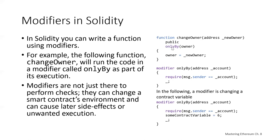If we look at what that modifier does, it says modifier only_by accepts an argument of type address named account, and it requires that the message sender is that account. What this does is require that the message sender is the owner address being passed in. If the message sender is the owner address, they can execute change_owner. If not, the require statement fails and you get an error when you call change_owner.